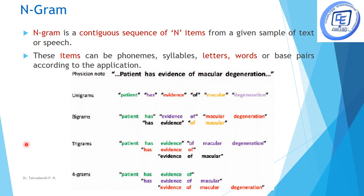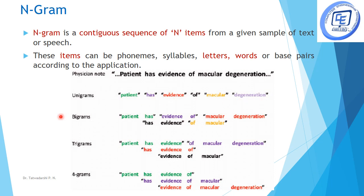The next question pertains to n-grams. What are n-grams and how do we solve a problem using n-grams? N-grams are contiguous sequences of n items, where items can be letters or words, and n can be any number from one onward. If n is one we have unigrams, if two we have bigrams, if three trigrams, and if four, four-grams. For example, given the sentence 'patient has evidence of macular degeneration': in unigrams we take one word at a time — patient, has, etc.